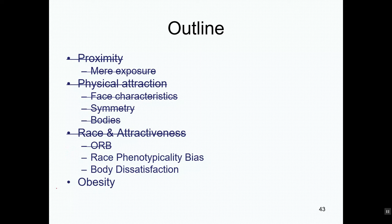Here we are in part five of six. I have my pen, so I'm ready to talk, point, and draw. Let's talk about these two topics: the race phenotypicality bias and body dissatisfaction, and try to tie everything up about race and attractiveness.